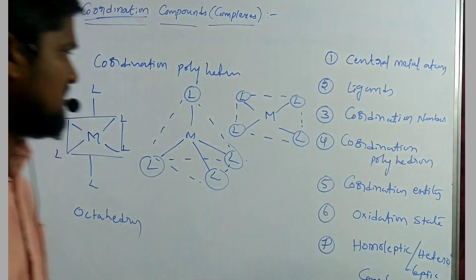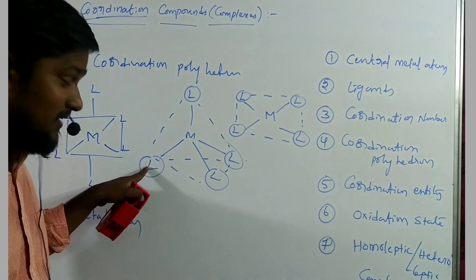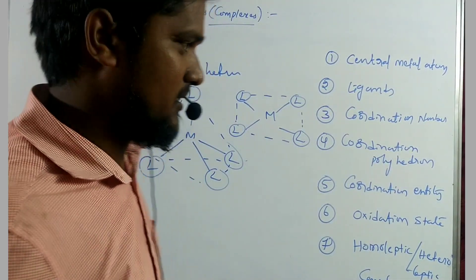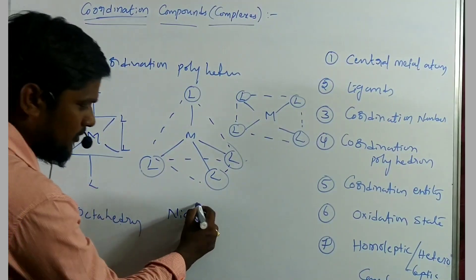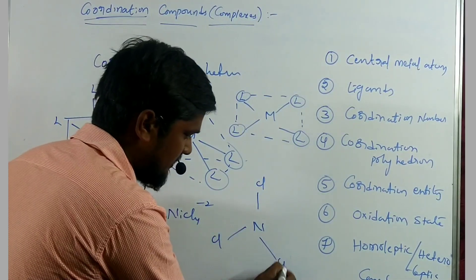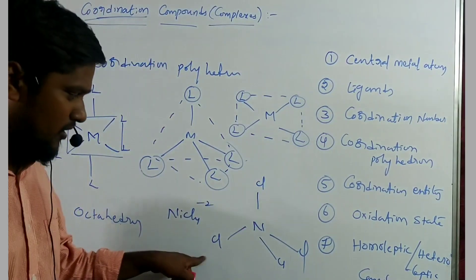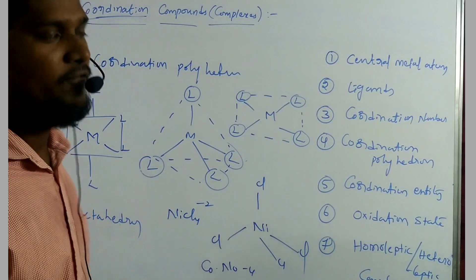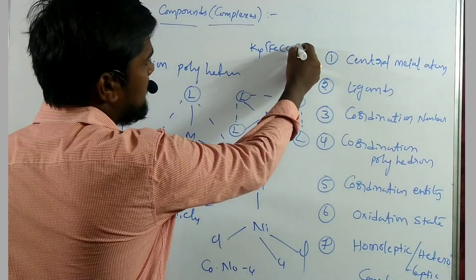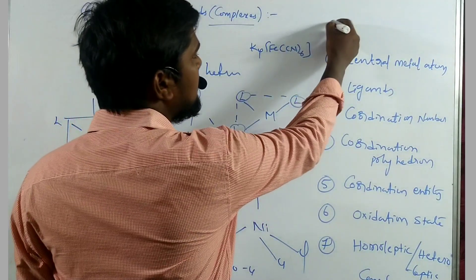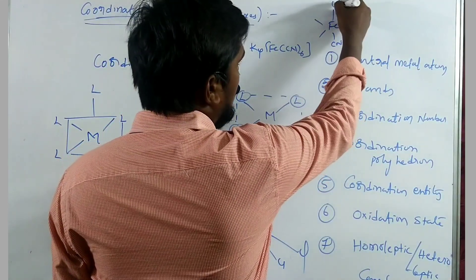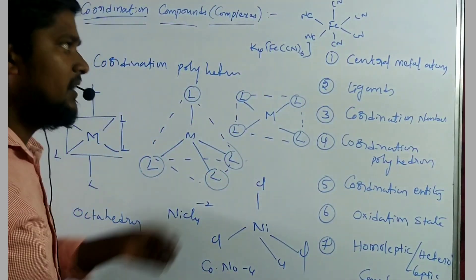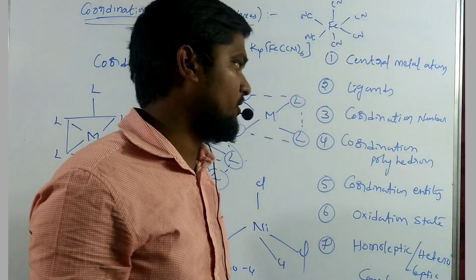The coordination number is the total number of atoms in the ligands which are connected to the central metal atom. For example, in [NiCl₄]²⁻, the four chlorine atoms are connected to the central nickel atom in a tetrahedral manner — so the coordination number is four. In K₄[Fe(CN)₆], there are six cyanide ions connected to the central metal atom — so the coordination number is six, and the coordination polyhedron is octahedral.